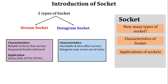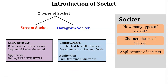Based on characteristics, the applications of stream socket are Telnet, SSH, HTTP, and HTTPS — these are based on request-response behavior. A connection is established before sending data, data is sent, and then the connection is terminated. The application of datagram socket is live streaming audio or video, where no connection is required — the sender directly sends data to the receiver without connection establishment.